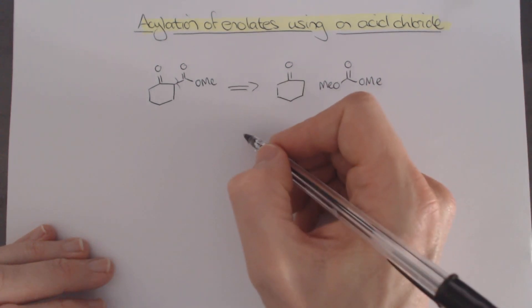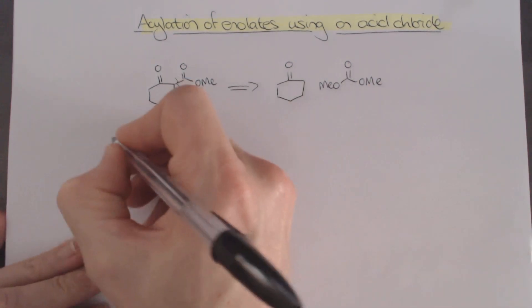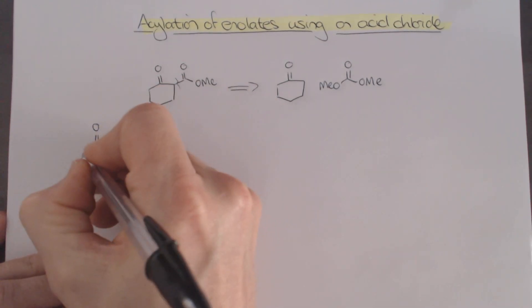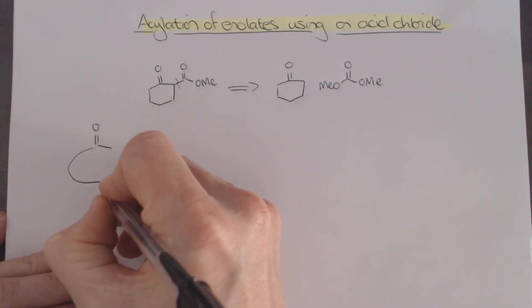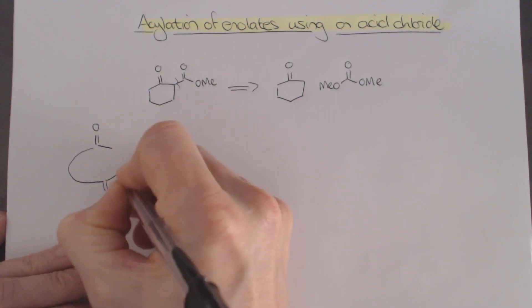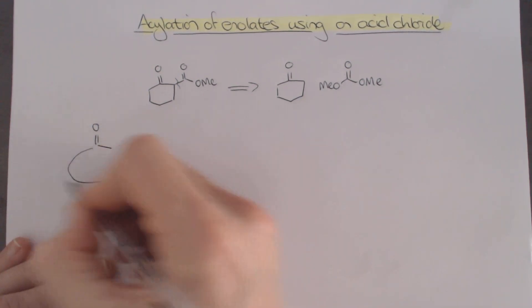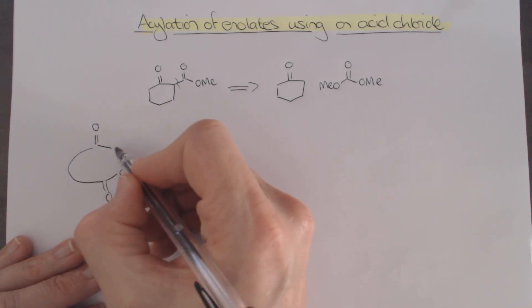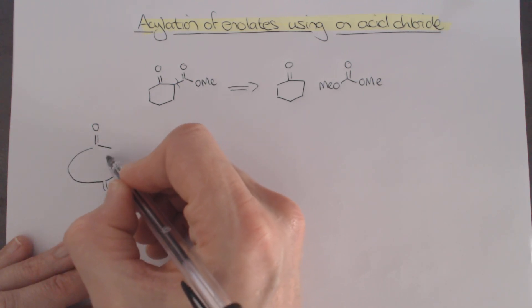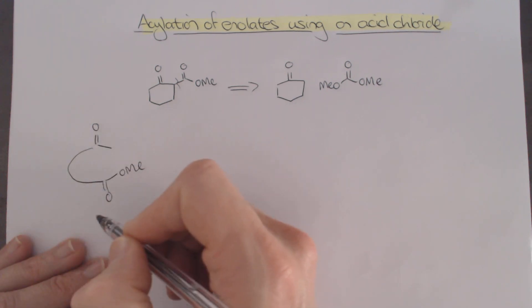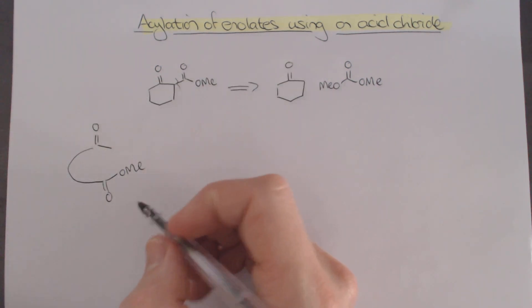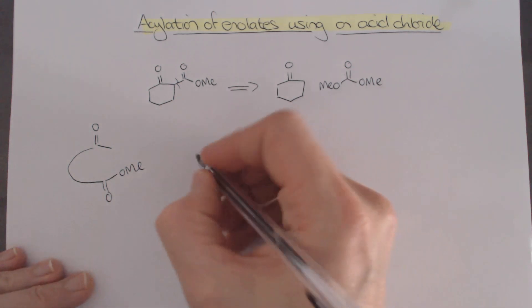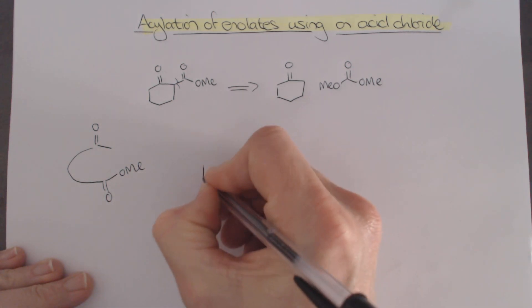For Claisen reactions in an intramolecular context — where you have a suitable chain — that works very well too. We can deprotonate quite easily, it closes in, and we form a cyclic molecule. That works quite well.